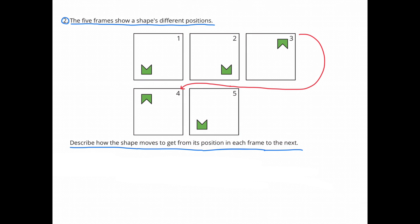How can you describe the movement of the image from frame 3 to frame 4? Moving from frame 3 to frame 4, the image moved horizontally to the left.